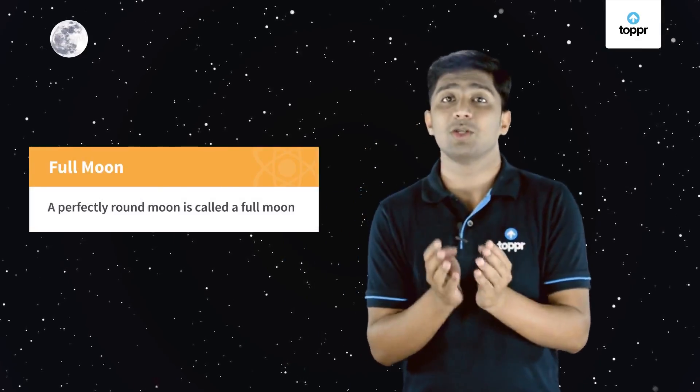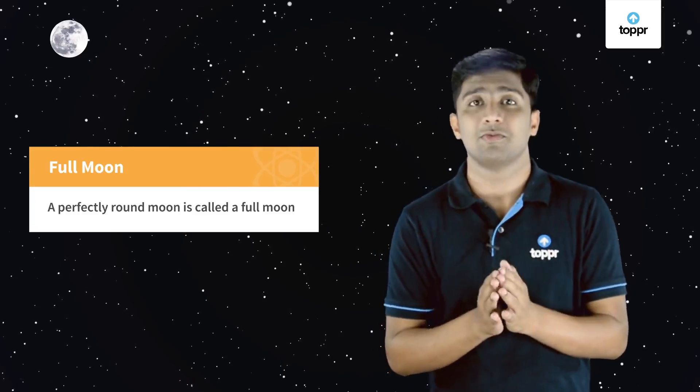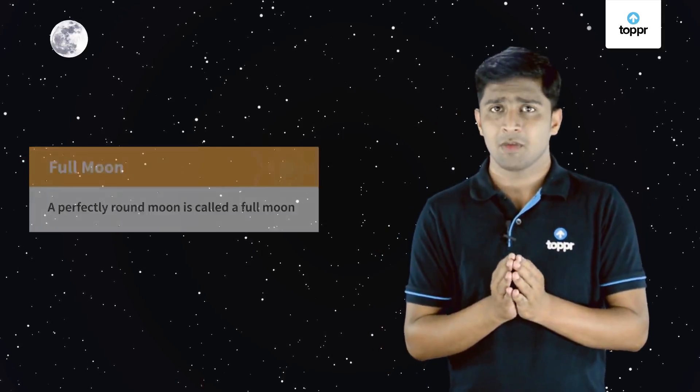The sky looks lovely tonight. The stars are shining brightly and the moon is perfectly round. You know what? A perfectly round moon is called a full moon. But even you might have noticed some days in the sky there is no moon at all, even if the sky looks very clear. But why does that happen? Why is the moon playing hide and seek with us?